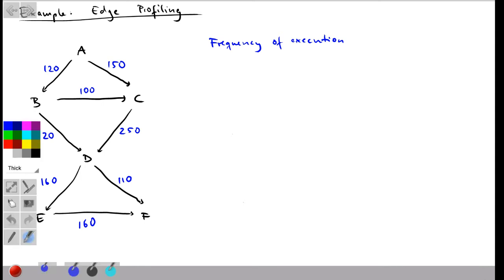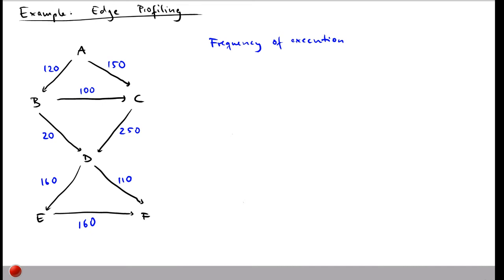Using these edge frequencies, we can try to identify the most frequent path. Starting at A, we choose between B (120) or C (150) — A→C has the higher frequency so we go to C. From C there's only one option: go to D. From D we choose between E (160) or F (110) — we take the edge to E. From E there's only one choice: F. This gives us the supposedly most frequent path A→C→D→E→F.